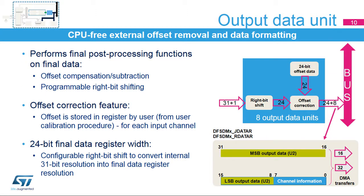The output data unit adjusts the final data before they are written to the final data register. An offset value that will be automatically subtracted from the data result for each channel can be defined in the offset register. The correct offset values are determined using the calibration procedure, which should be programmed in user firmware and depends on the type of sigma-delta modulator connected and application needs. The maximum resolution of the final output data register is 24 bits, but the internal resolution can go up to 31 bits.